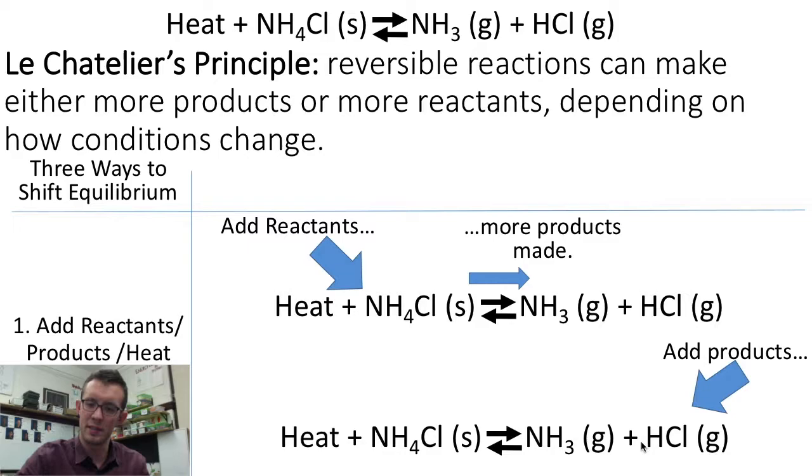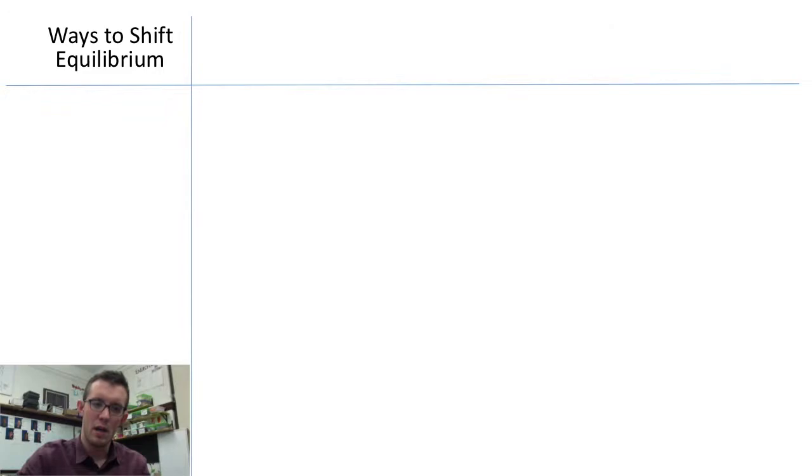But the opposite would be true too. If we added more products to our system, that is we added more hydrogen chloride or more ammonium, that would end up resulting in more reactants being made. The reaction would shift backwards.